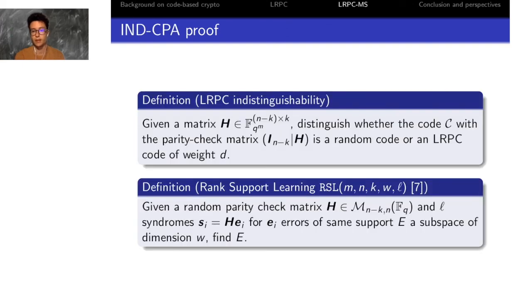Finally, we give in our paper the proof that our cryptosystem is indistinguishable under the chosen plaintext attack if we assume the difficulty of the two following problems. The first one is the indistinguishability between a systematic LRPC parity check matrix and a random matrix, which comes from the fact that we are using a masked cryptosystem.